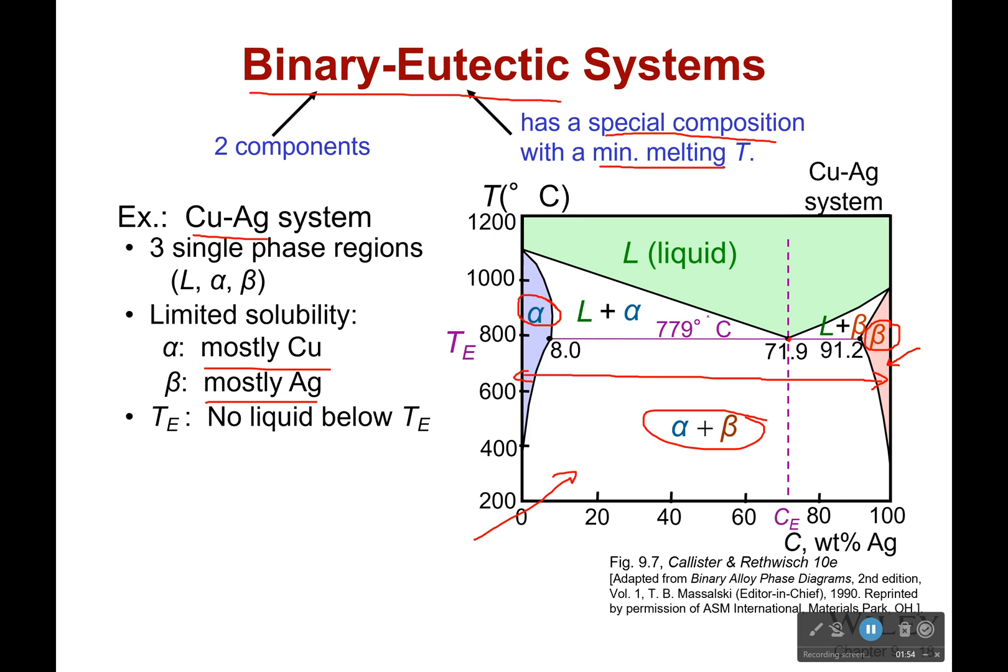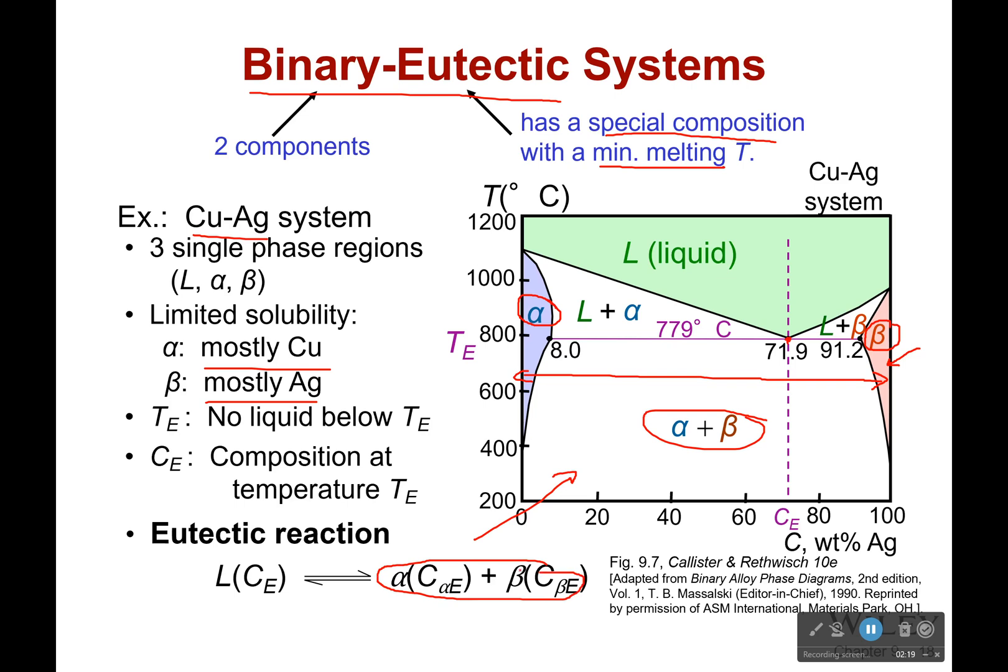Now we have this eutectic point right here, which is the point where it melts at the lowest temperature possible. And it's lower than either of the melting points. And as long as we're below that temperature, there is no liquid. And if we're at that special temperature, we have a eutectic reaction. So we go from two solid phases to a single liquid phase. That's important. Two solid phases to a single liquid phase.